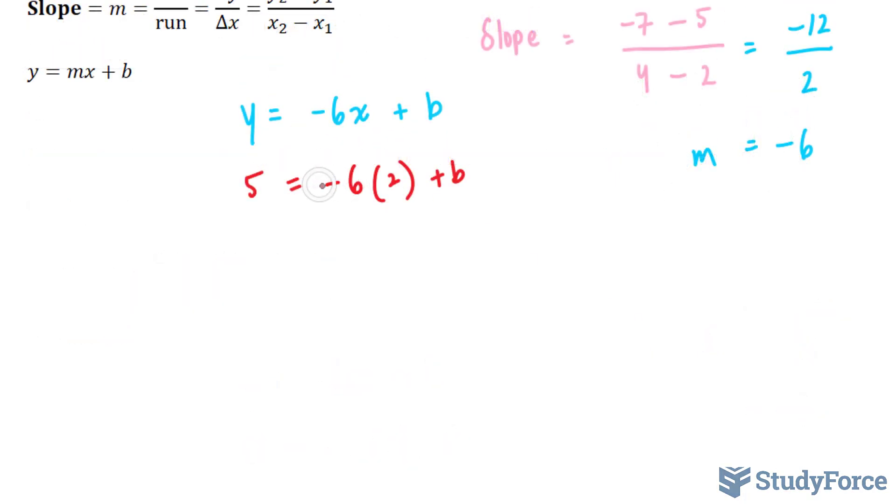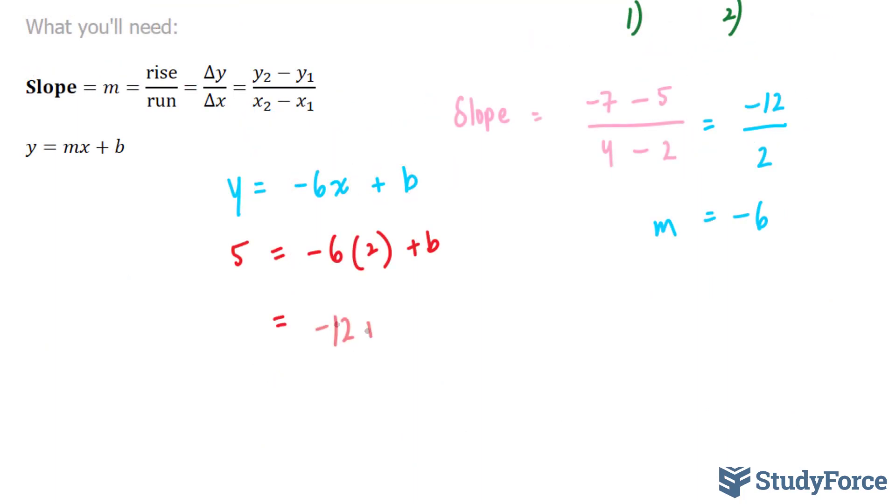Next, I will evaluate the right side. We have negative six times two, which is negative twelve plus b. If you rearrange this formula and solve for b, you end up with 5 plus 12, bringing this 12 over. 5 plus 12 is 17, which is equal to your b value.